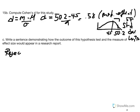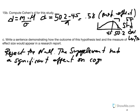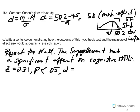Rejecting the null means the supplement had a significant effect on cognitive skills. Our supporting statistics: z equals 2.31. The probability of obtaining that sample average of 50.2 from an untreated population — it's always about the probability of obtaining that sample mean from the untreated population — is less than our alpha of 0.05. And d equals 0.58.